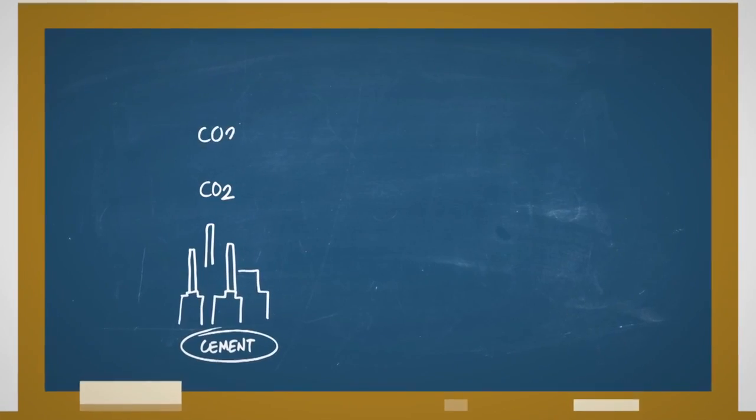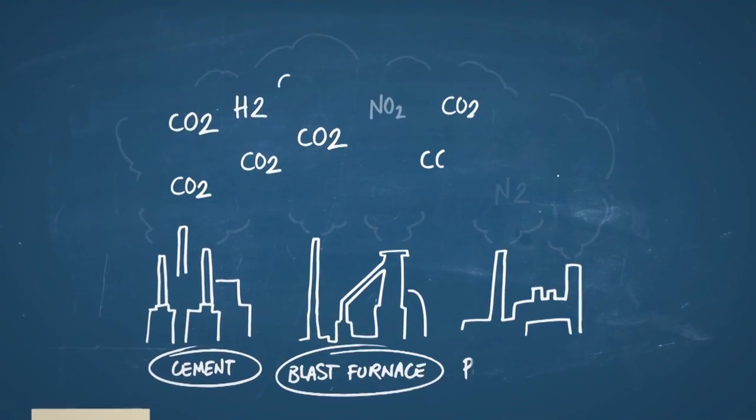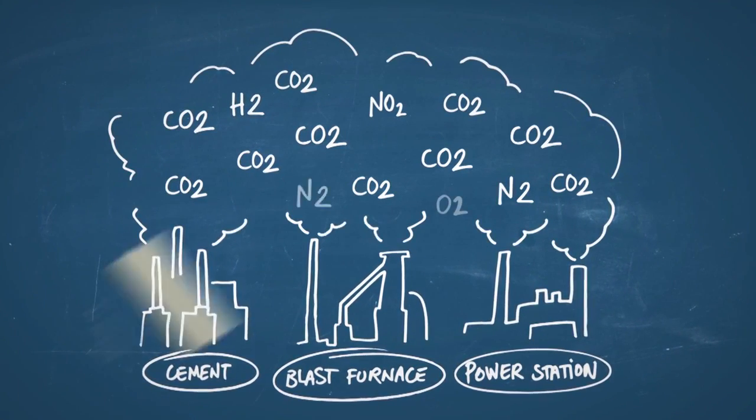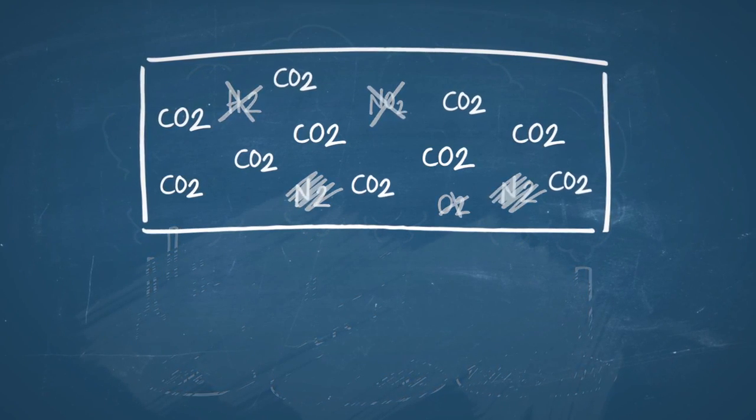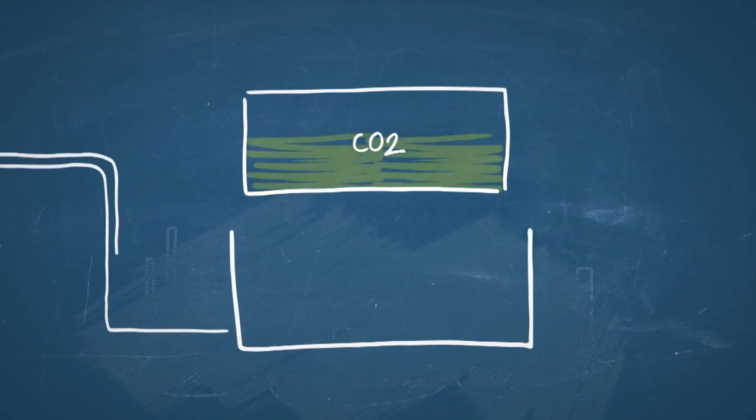The CO2 is extracted directly from the source at a cement manufacturing plant, a blast furnace, a power station, or any other infrastructure of this kind. A carbon capture plant refines and separates the CO2 from other components.